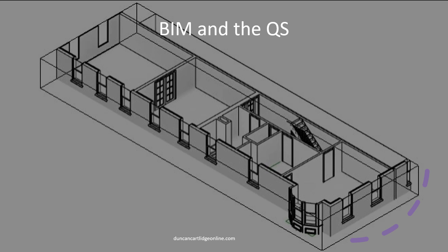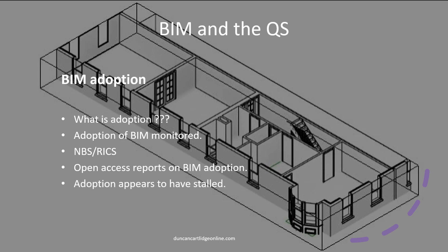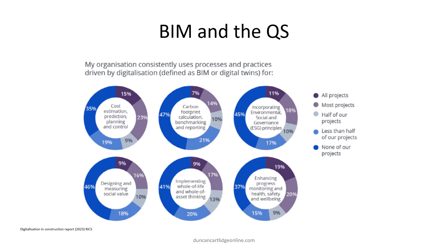Given the lack of enthusiasm, what is the scale of adoption by the UK construction industry, and how much of a threat is BIM to the future of the QS? The adoption rate is monitored by organisations such as NBS and the RICS, and the outcomes of a number of surveys can be reviewed in open access reports. The crucial word is adoption, as many organisations use a form of BIM but not the entire package. This page taken from an RICS survey on the use of BIM illustrates quite clearly that the number of organisations using BIM for all projects is low, and it appears to have stalled when compared with previous years.